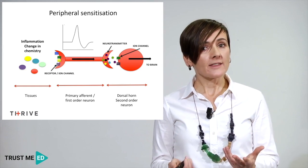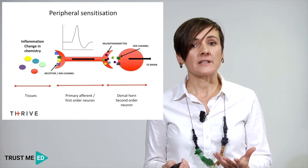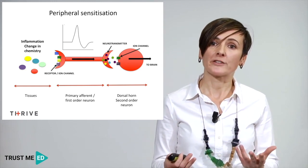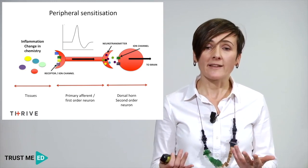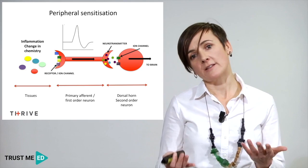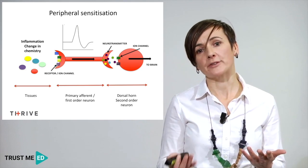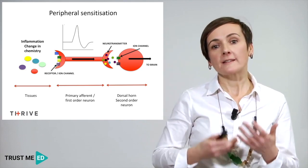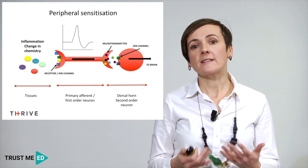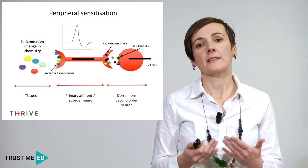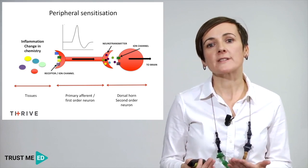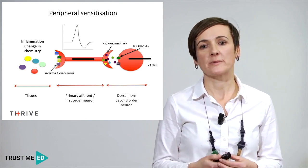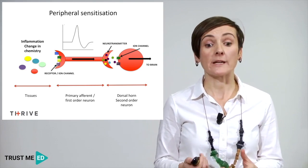The second thing that can happen is that we get more and different ion channels expressed at the end of the primary afferent neuron. This will again sensitize the nervous system and allow action potentials to be generated more easily.